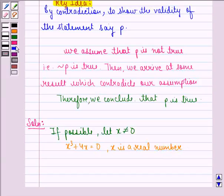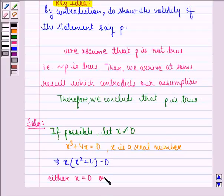Now, x³ + 4x = 0 implies that x(x² + 4) = 0. So either x = 0 or x² + 4 = 0.